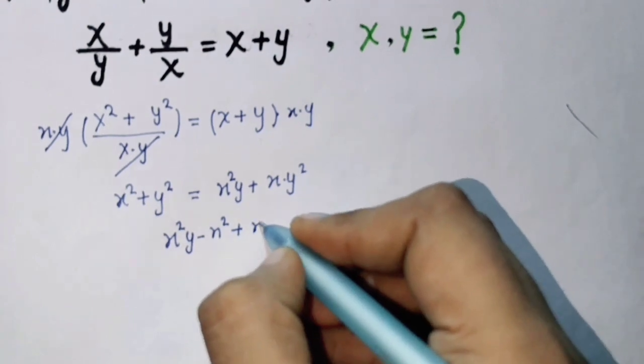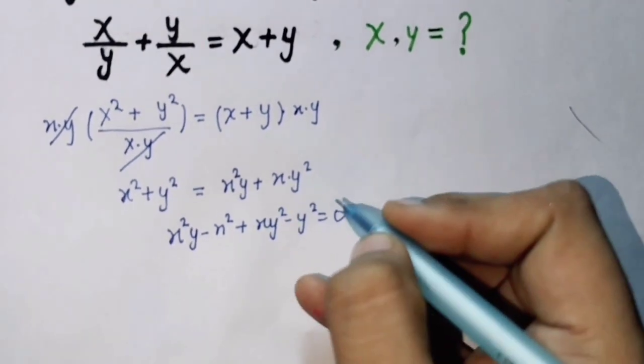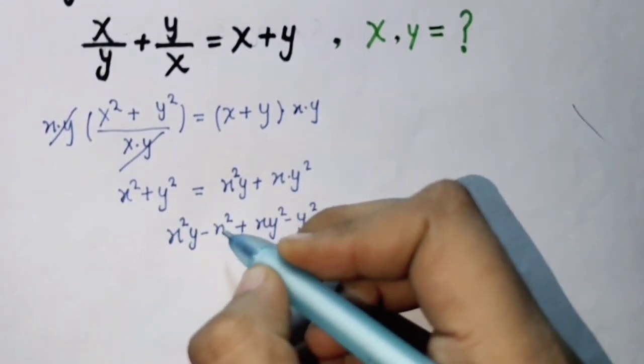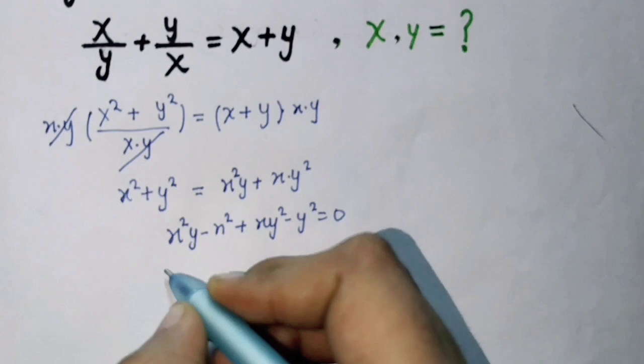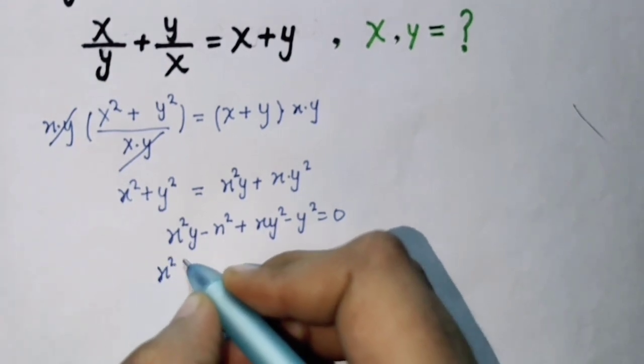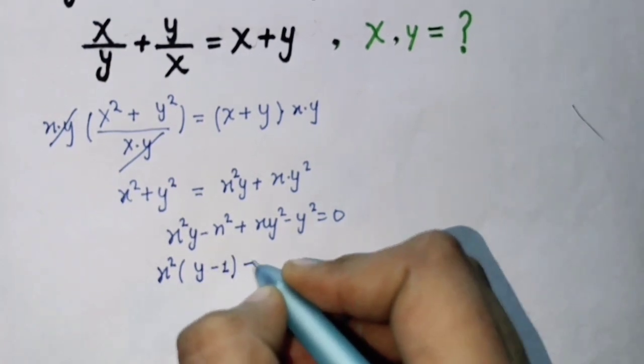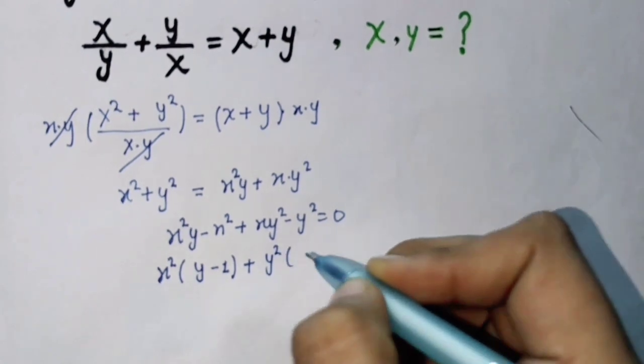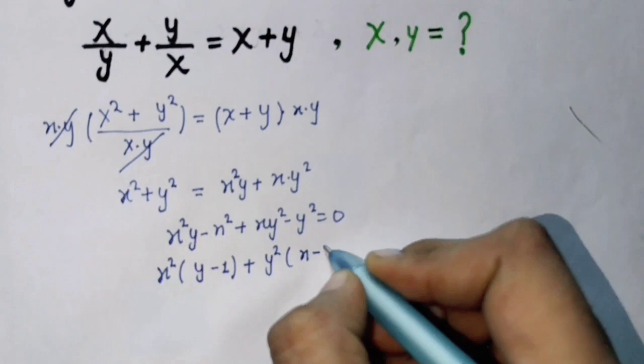Now we can see that these two terms, x squared times y minus x squared, these two terms x squared common. So x squared take the common, so we left out y minus 1 plus y squared times y minus 1 equals 0.